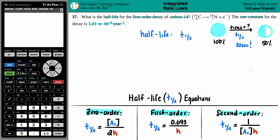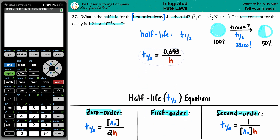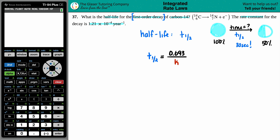There are three half-life equations you probably have to memorize, depending on the order. Always look back at the question to see whether you need the zero-order, first-order, or second-order equation. The question asks for the first-order decay, and the first-order half-life is always: T-half equals 0.693 — that's the ln of 2 — divided by k. So that's the only formula we need here.